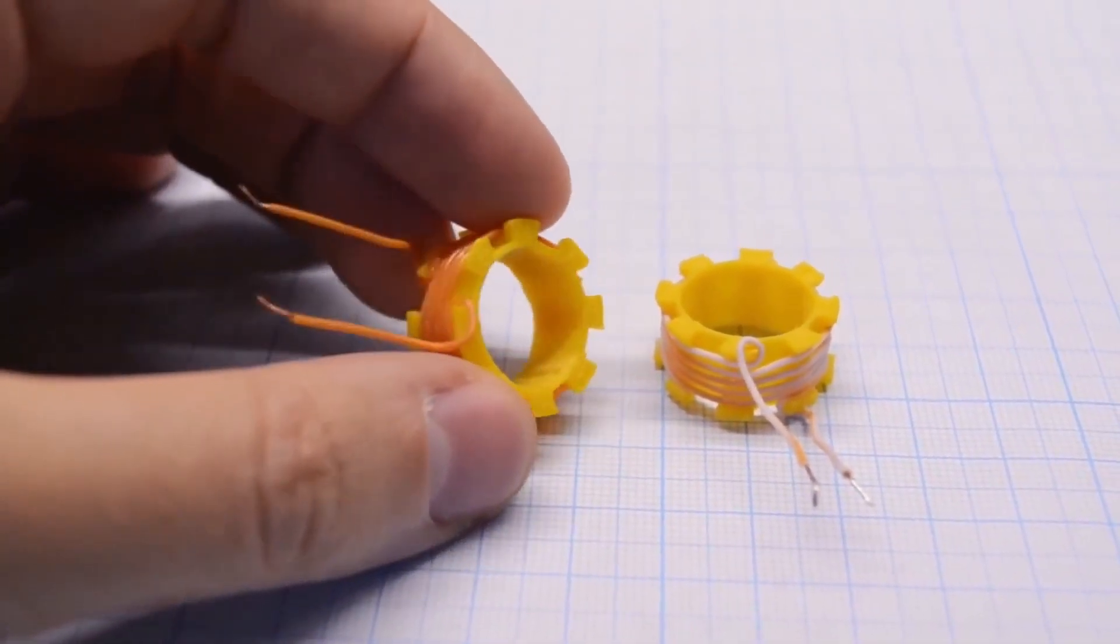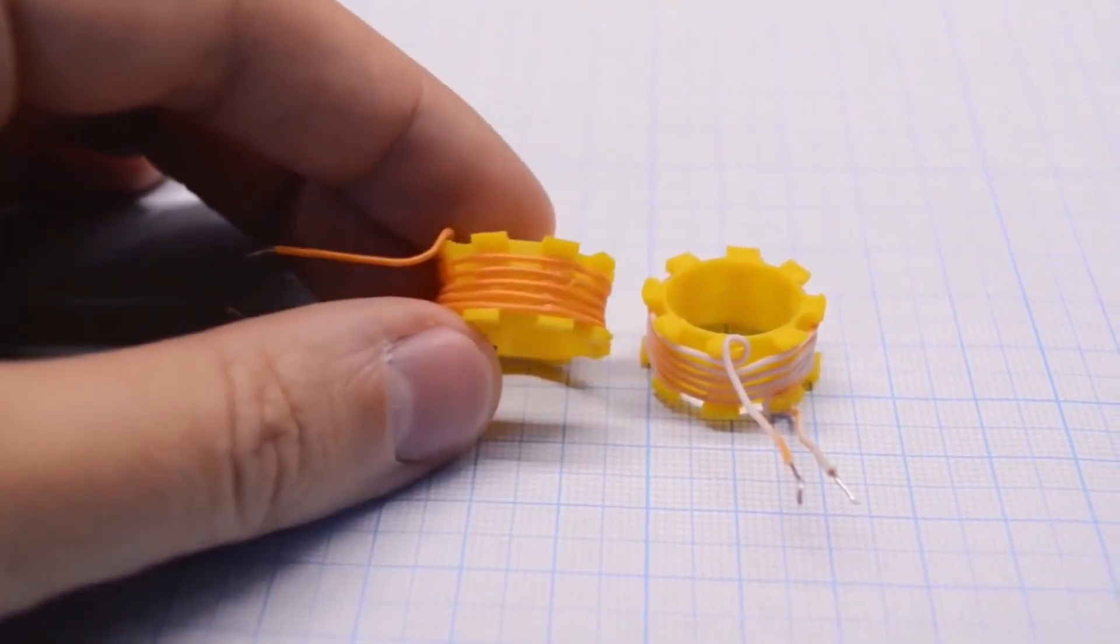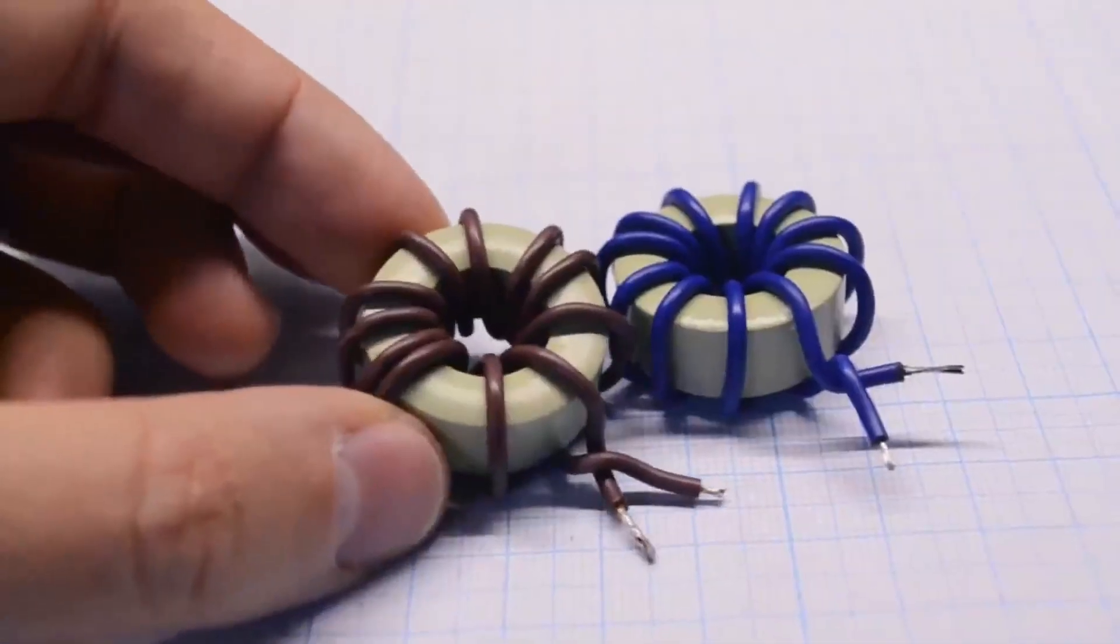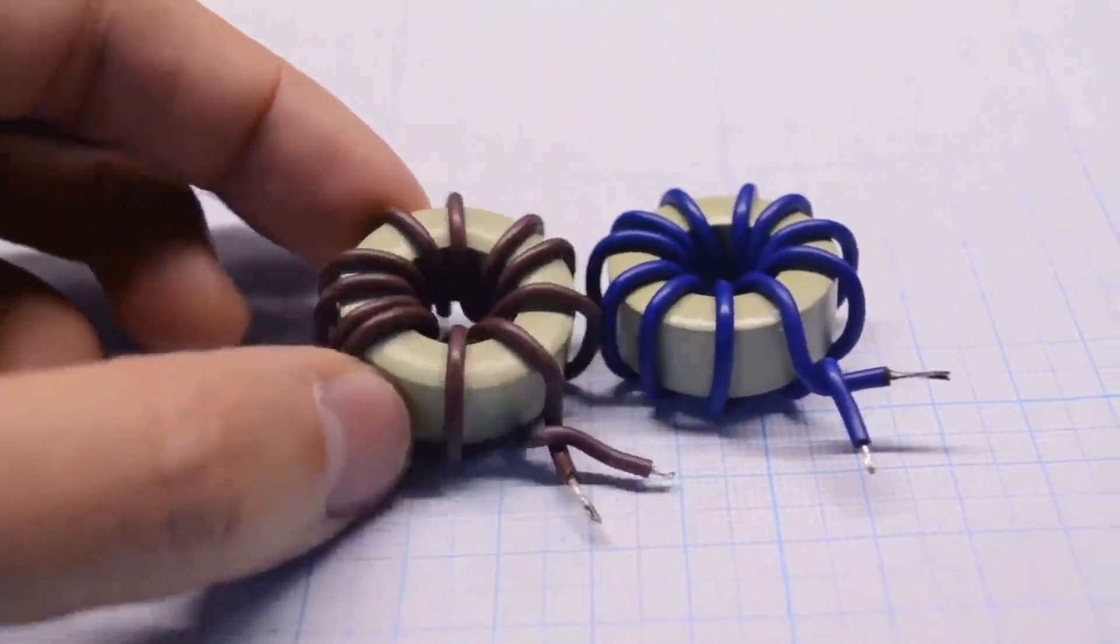Got it. So, the picture from the internet doesn't lie. As shown in it, that's how the coil should be positioned. And what should be done with toroidal coils? Let's figure it out.